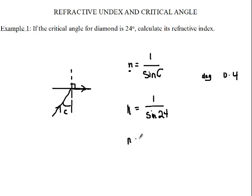So N is equal to 1 over 0.4. And then 1 over 0.4 is equal to 2.5.